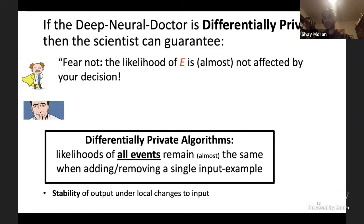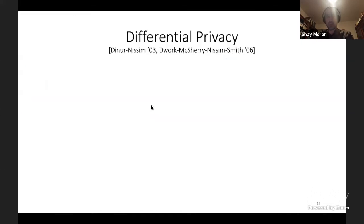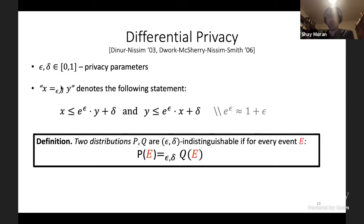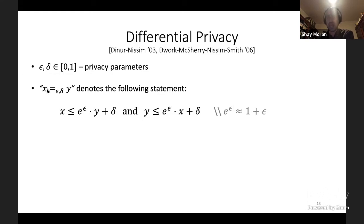This is a strong form of stability. Formally, fix epsilon and delta in (0,1) as privacy parameters. We say x and y are equal up to (epsilon, delta) if x ≤ e^epsilon · y + delta and vice versa. Since e^epsilon is roughly 1 + epsilon, after an affine transformation that is almost the identity, x and y are the same number.